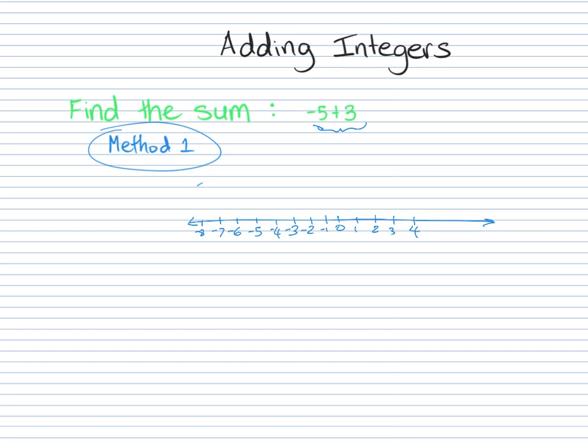In order to add using the number line, you start off with one of the numbers that you have. I like to make it easy and consistent, so I usually start with the first number. That's not actually a rule, you could start with any number. I start off with -5 in this case, and the addition tells you to move. It tells you how far to move and what direction to move. If you're adding a positive integer, you move to the right. And if you're adding a negative integer, you move to the left.